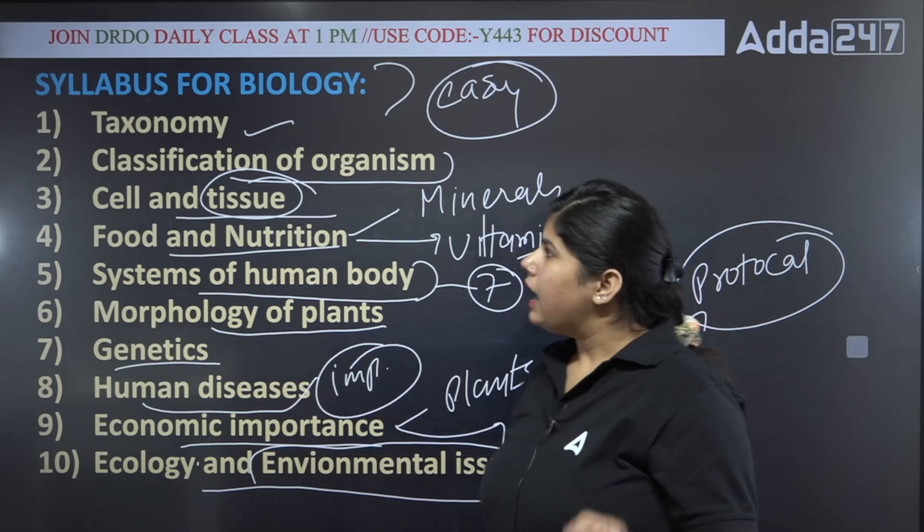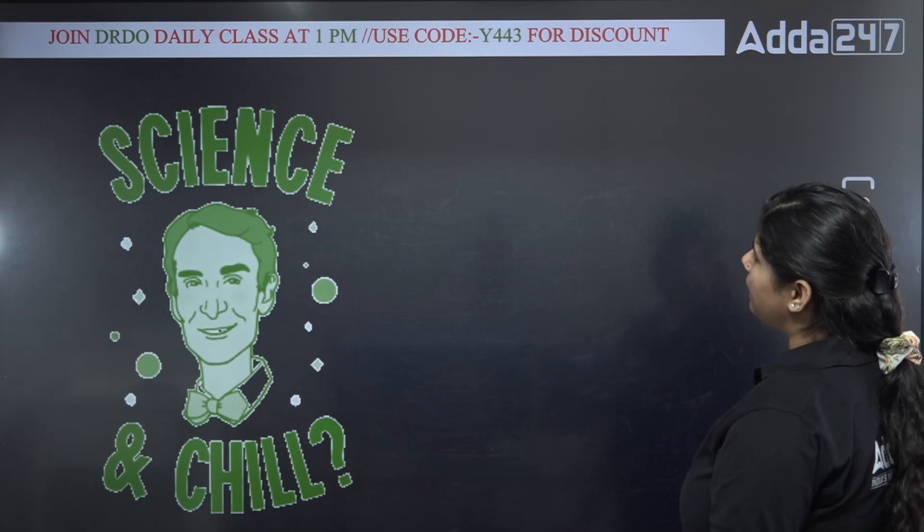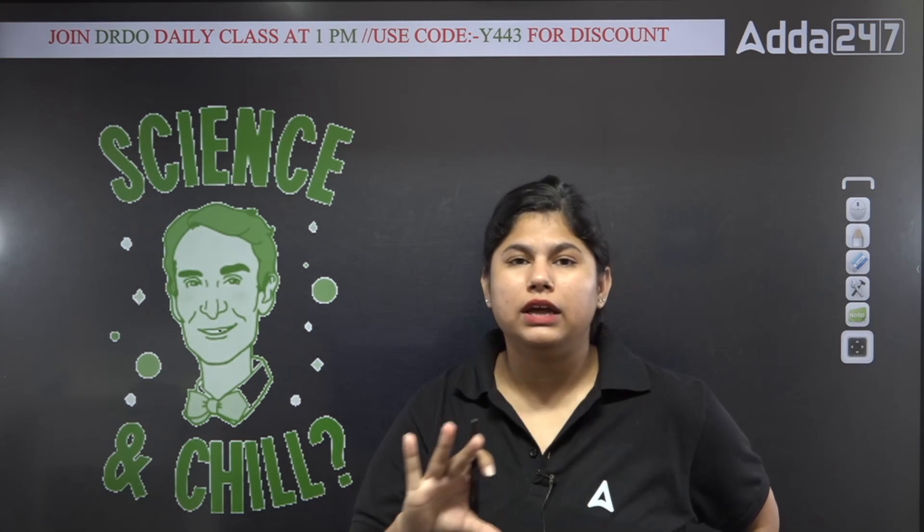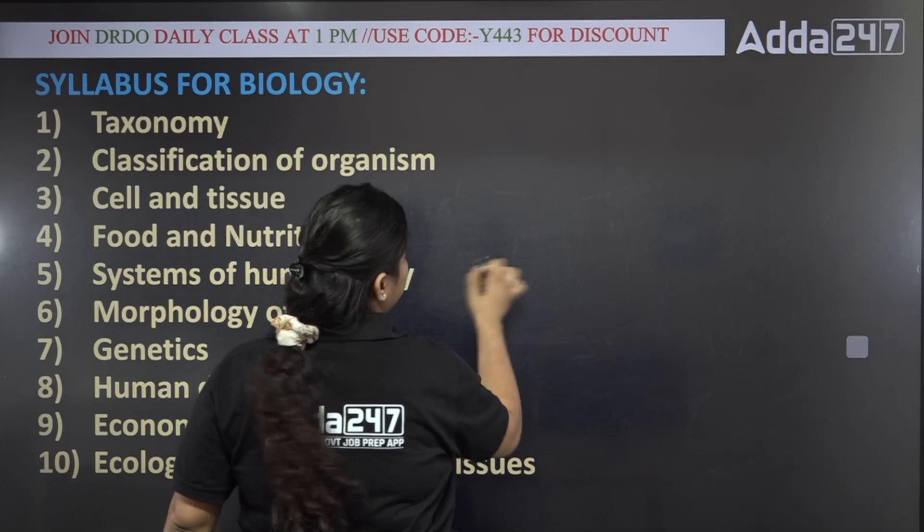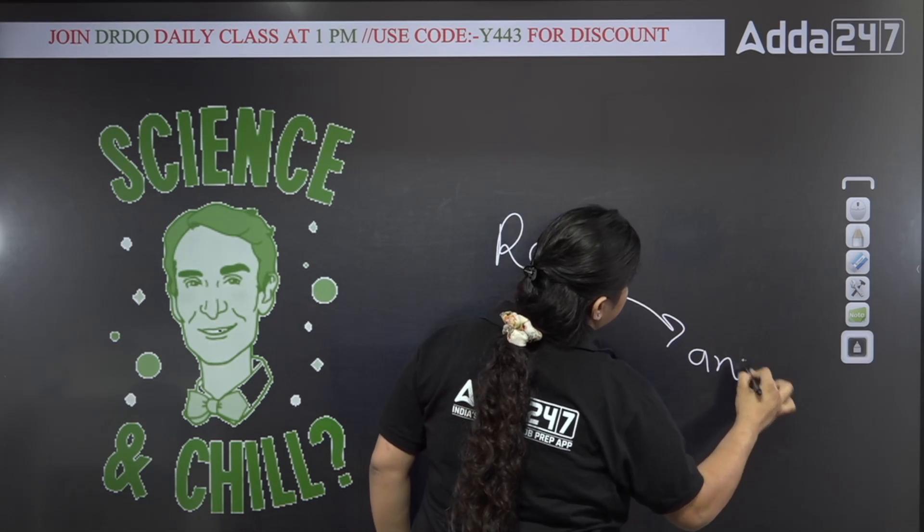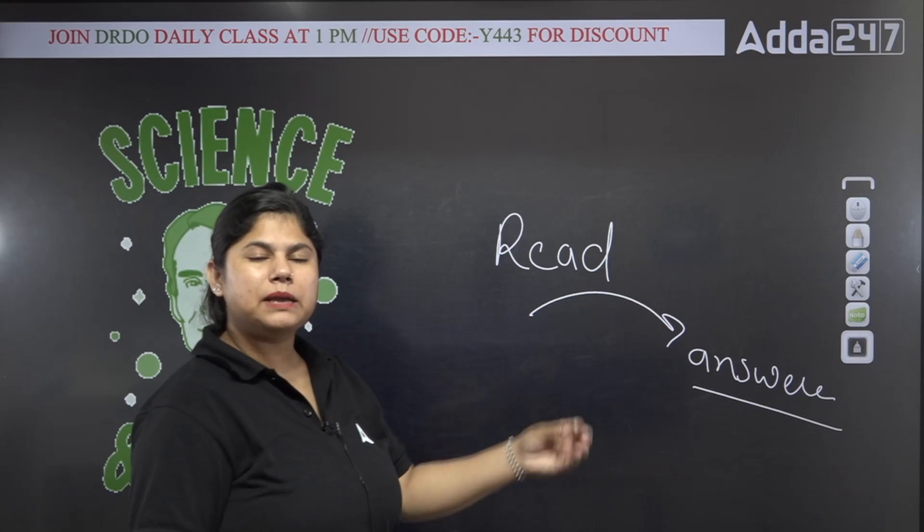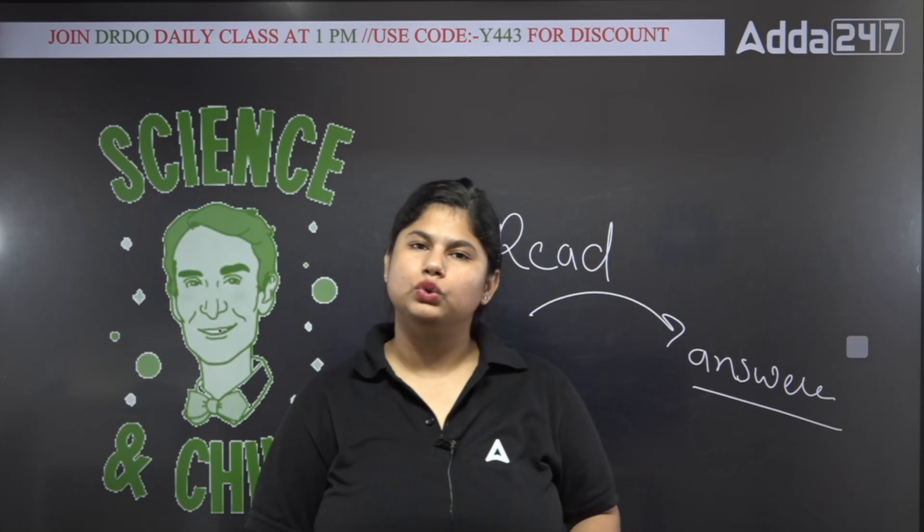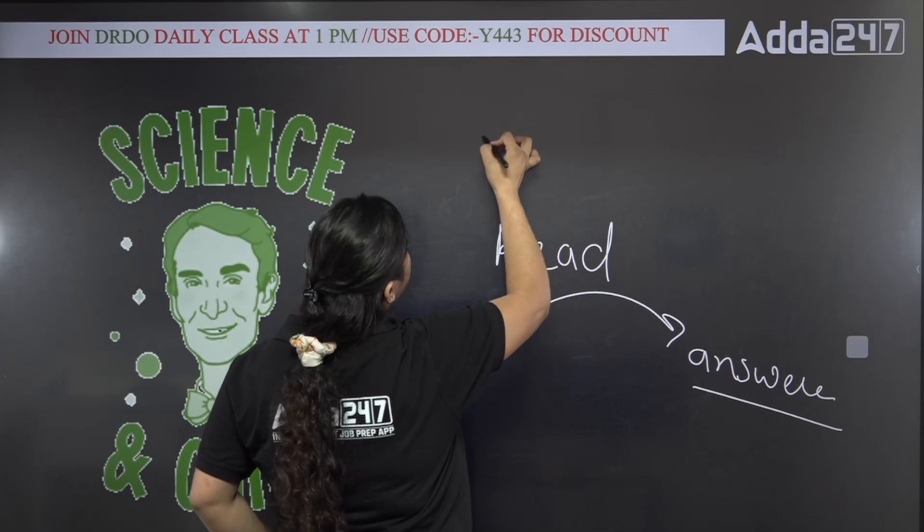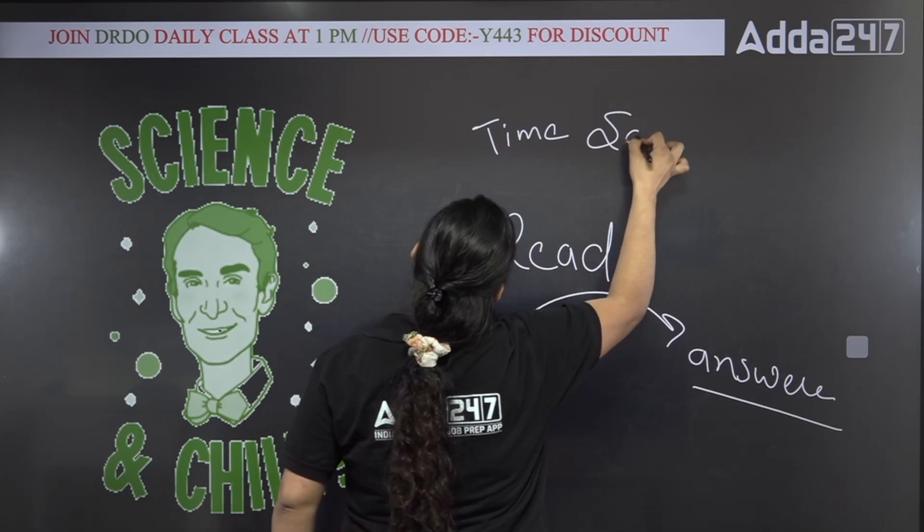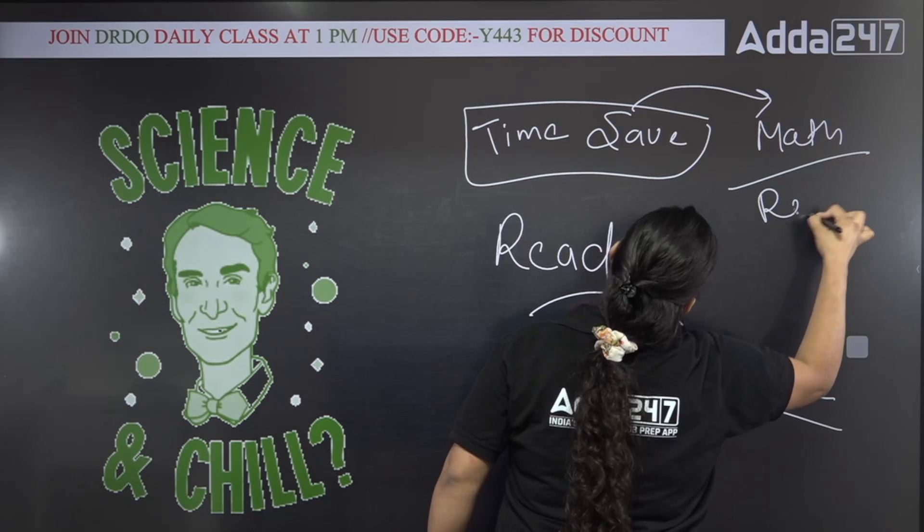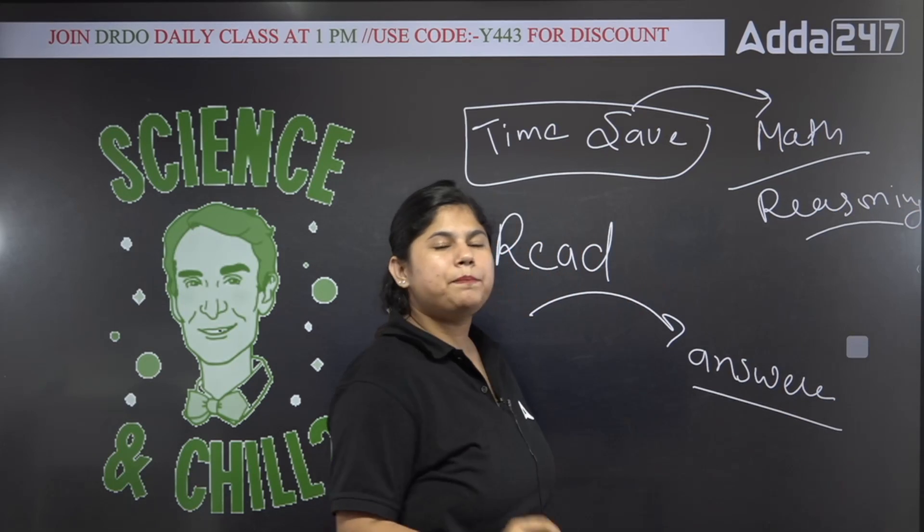In science, why is science easy? You don't think you have to just read and calculate. You have to read the question and just answer it. It will come to mind. The most important thing is that there is no calculation here. If there is no calculation, you will save time. Time saved, you can give to other subjects like math, reasoning. This is the benefit of science.